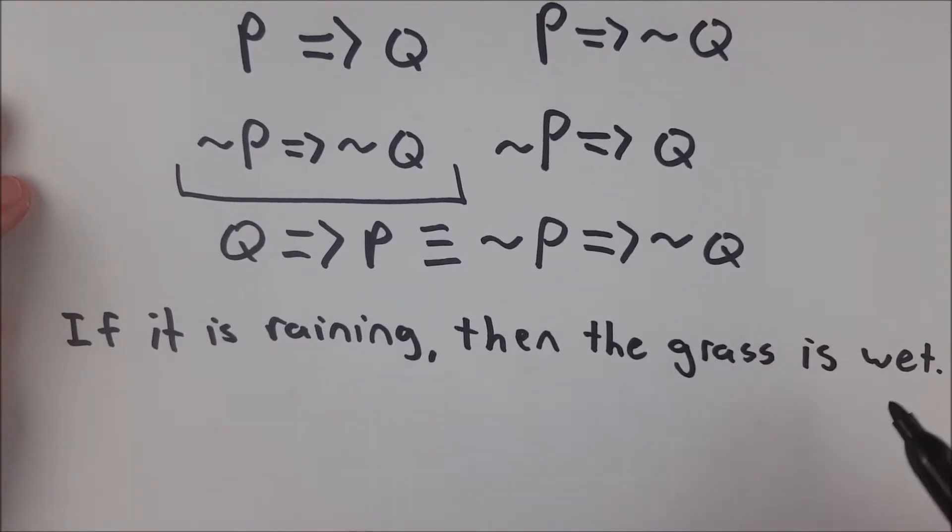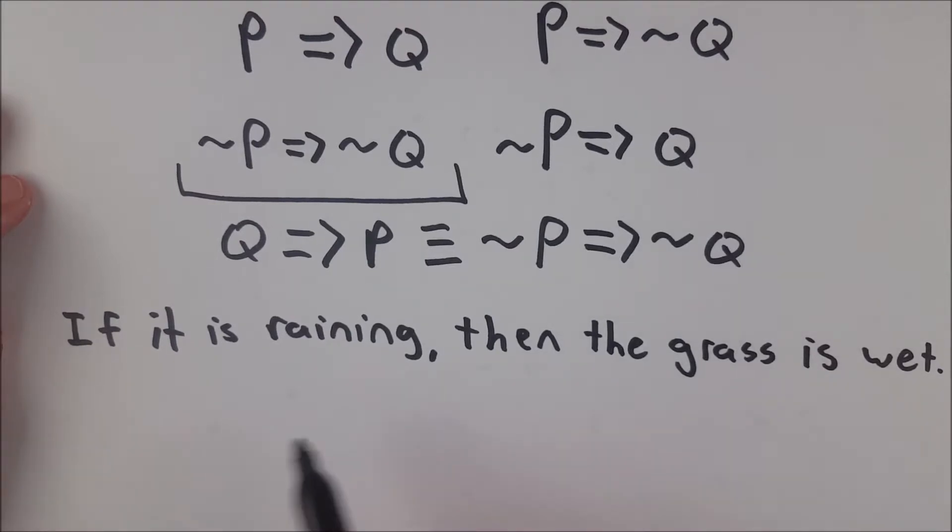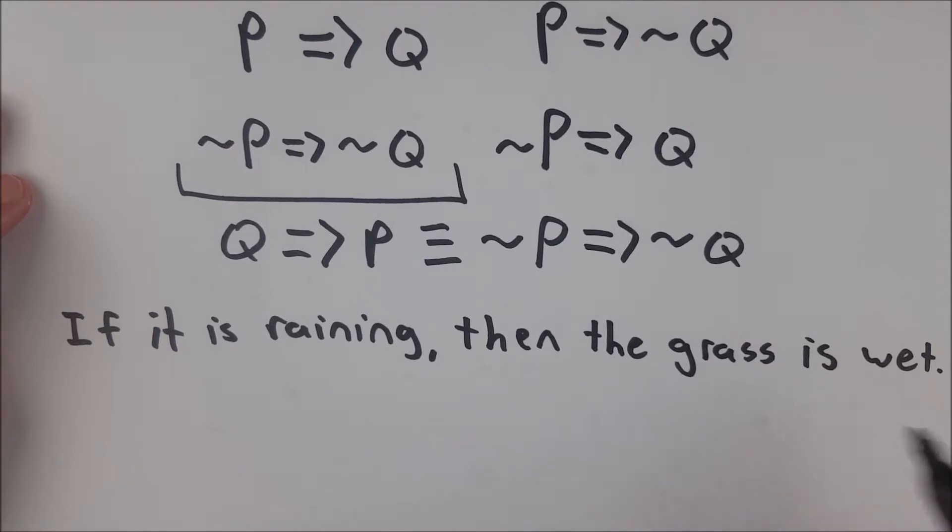So if we want to take the inverse of this statement, we simply take the opposite of both P and Q and leave them in the order that they're currently in. So it's if it is not raining, then the grass is not wet. That is what the inverse is.